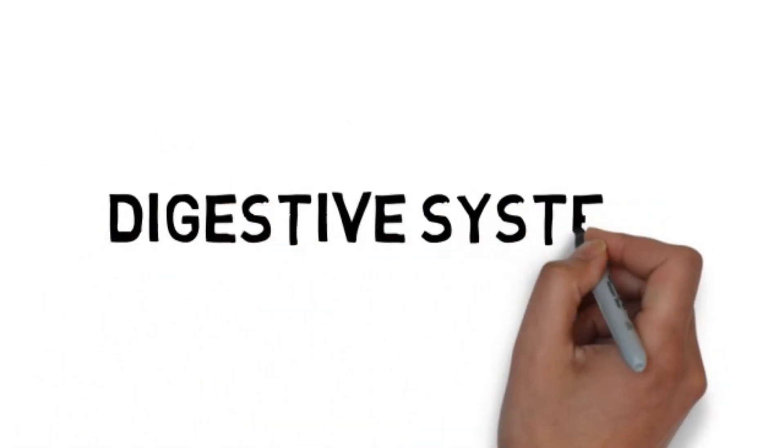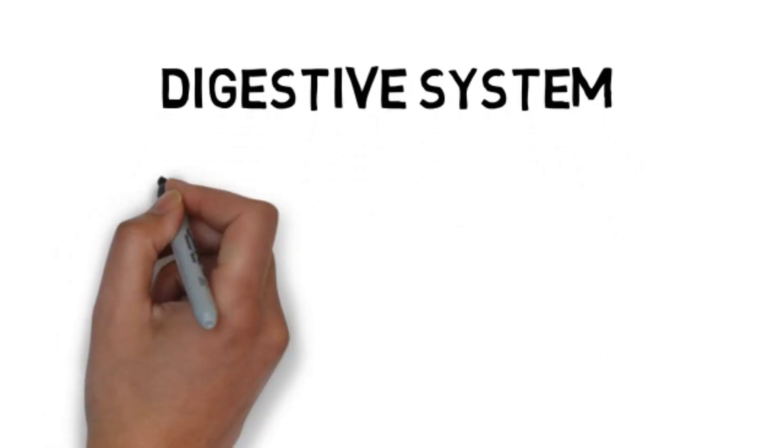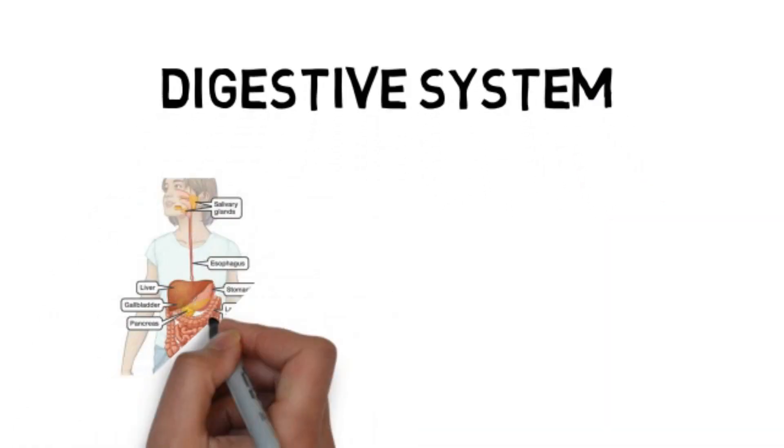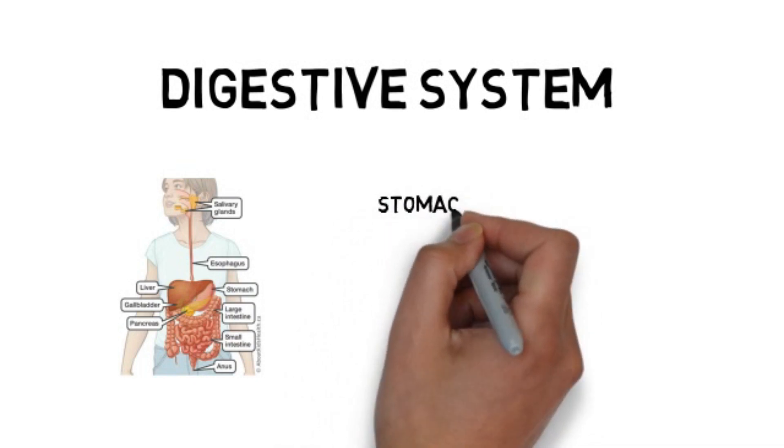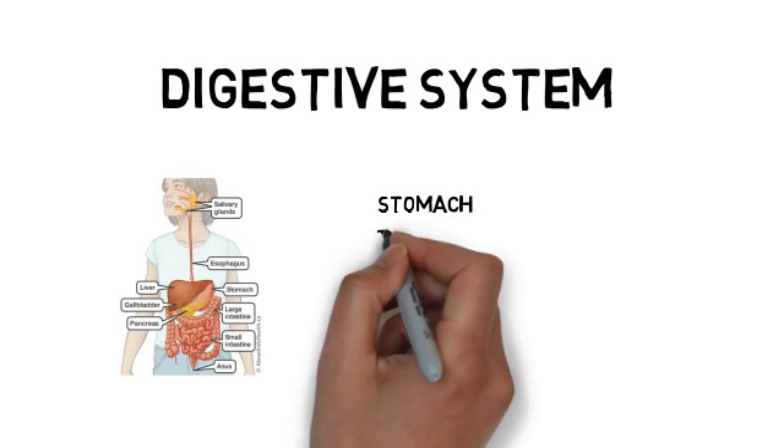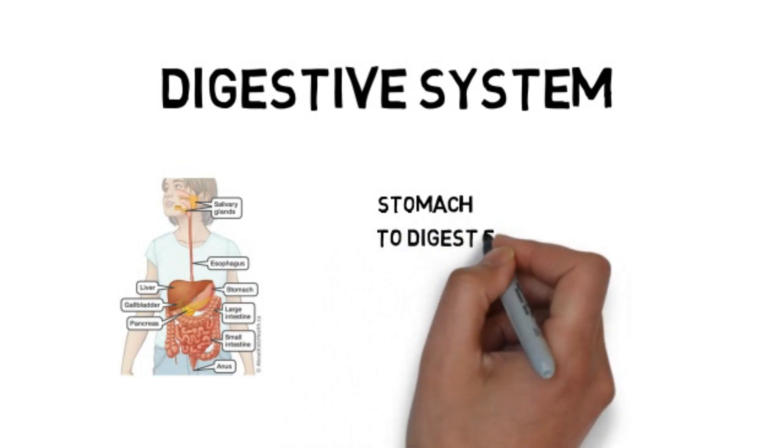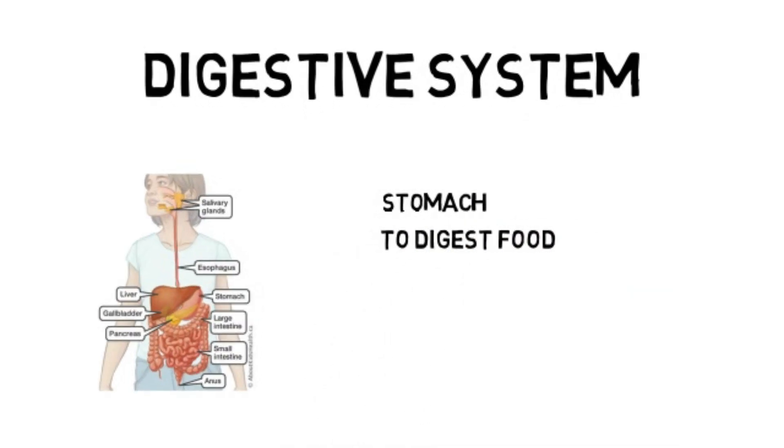Digestive system. This is the picture of the system. The main organ of the system is the stomach. It is where all the digestion happens, so the function of the stomach is to digest the food.